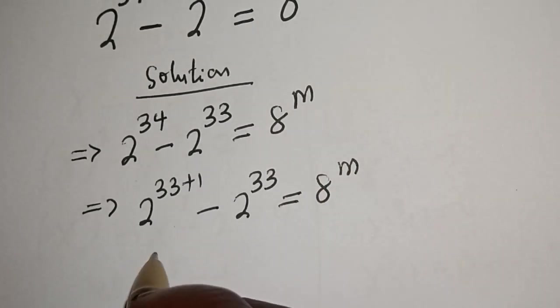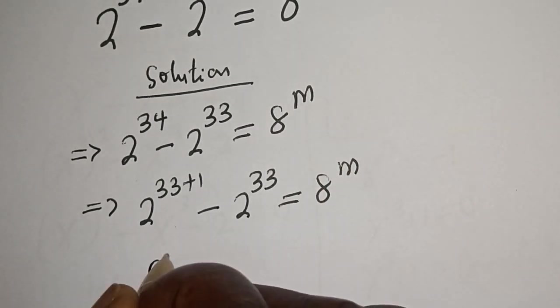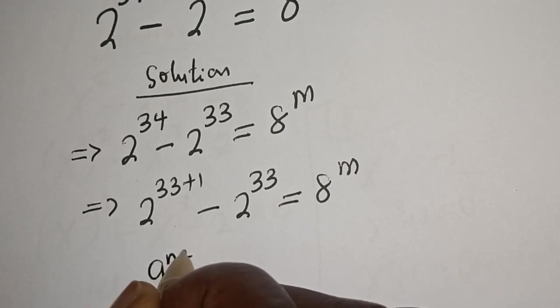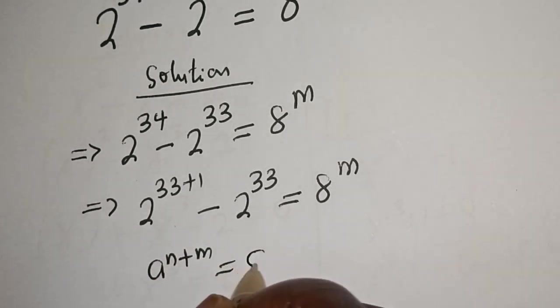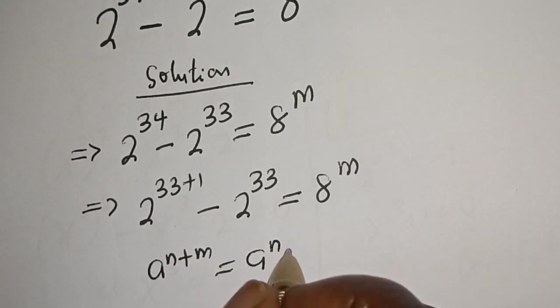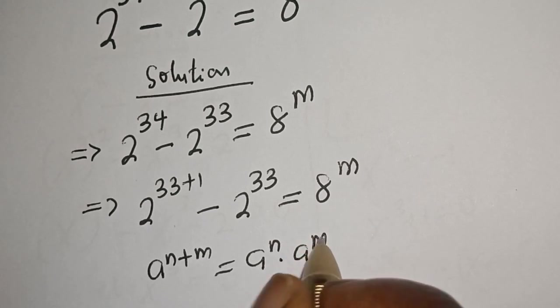Take note of this exponential rule: a raised to power n plus m is equal to a raised to power n, multiplied by a raised to power m.